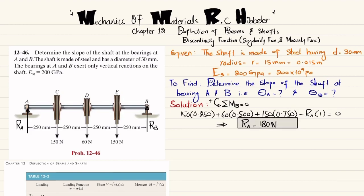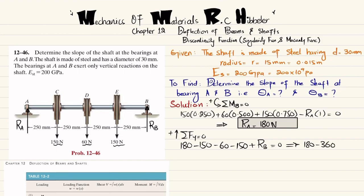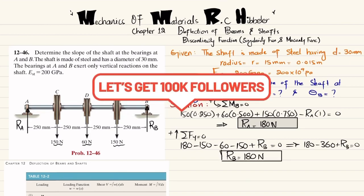We can find R_B using the sum of all forces in the y-direction equal to zero, taking upward as positive. R_A is upward (+180), and the three loads are downward (−150, −60, −150), plus R_B upward. So: 180 − 150 − 60 − 150 + R_B = 0, giving R_B = 180 N.